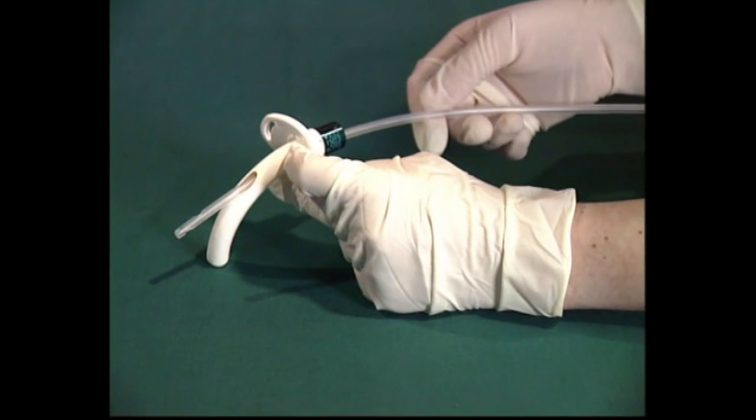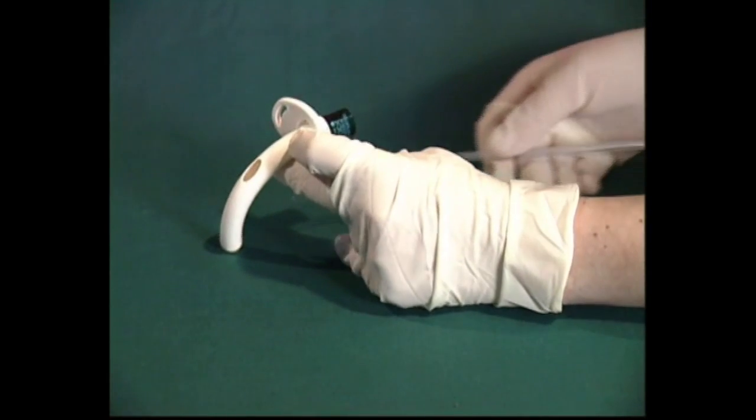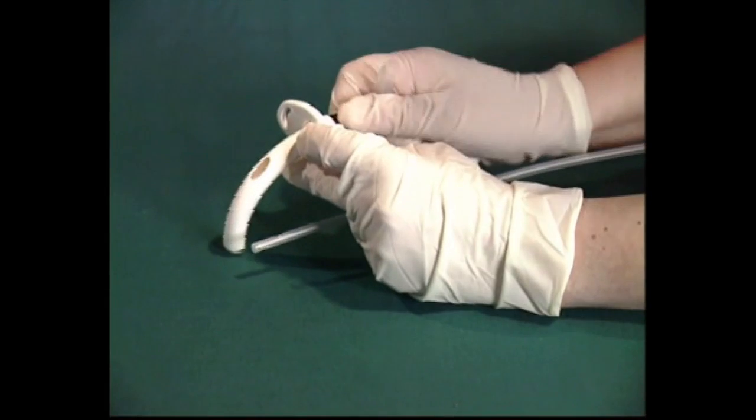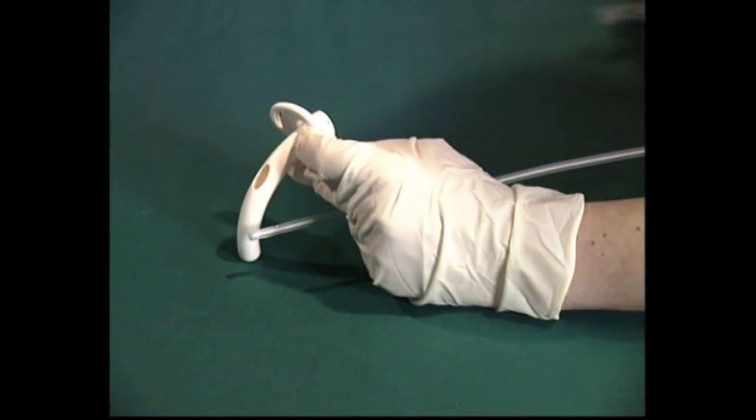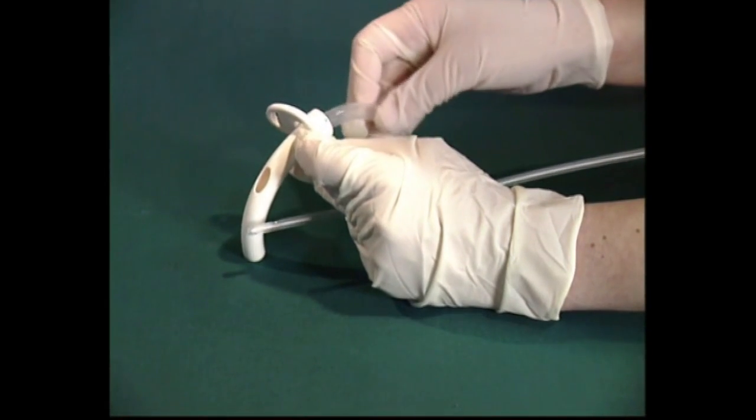Always check what type of tube your patient has in situ and if it's a single fenestrated tube then the non-fenestrated inner cannula should be reinserted prior to endotracheal suctioning.